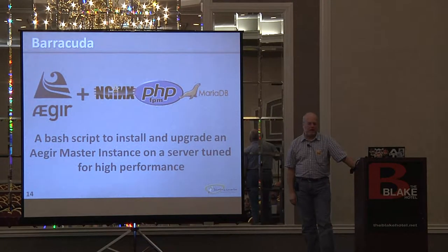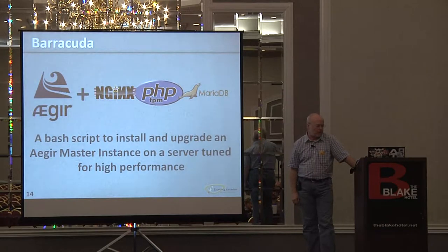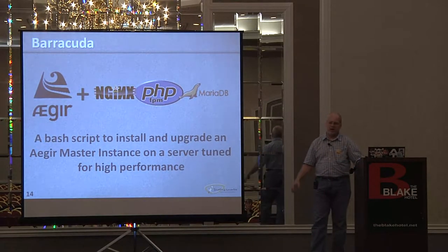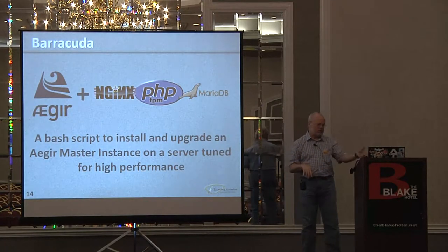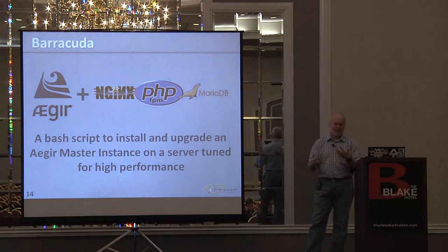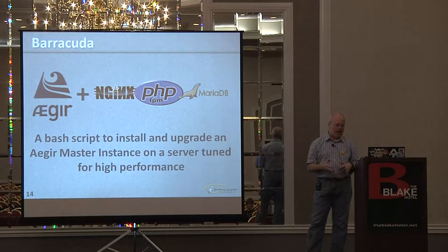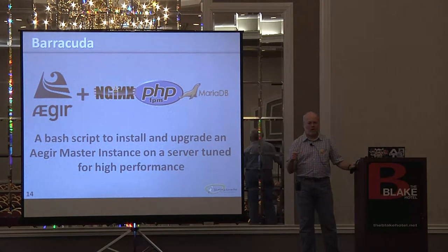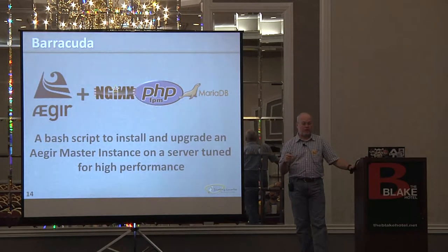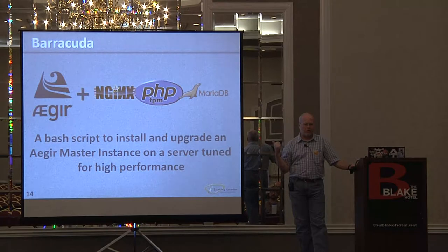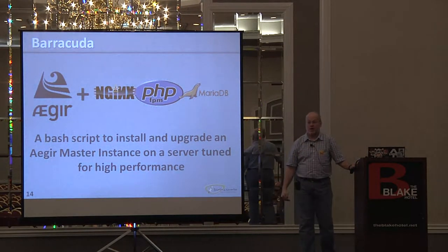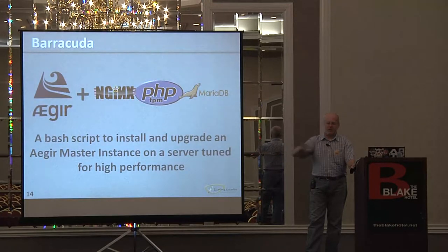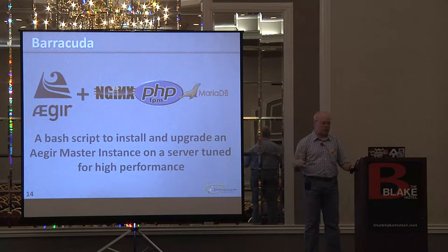The B part of BOA — Barracuda — takes Aegir and sets it up on a specific server configuration. It uses Nginx, which is a replacement for Apache; it uses a fast version of PHP; and it uses MariaDB. If you were in Eric Webb's presentation this morning, you may have heard him discuss all three of those — he mentioned them in terms of where people are going when they start to think about performance. Barracuda takes care of all of that for you when it installs on your server.